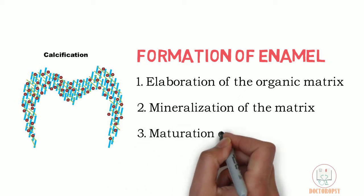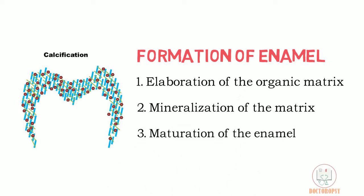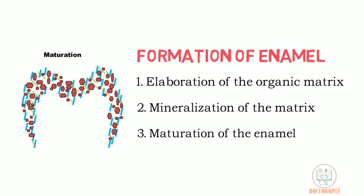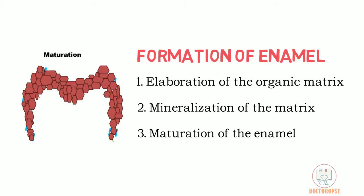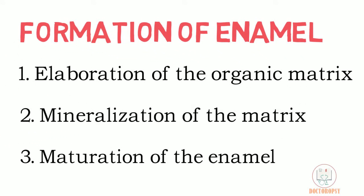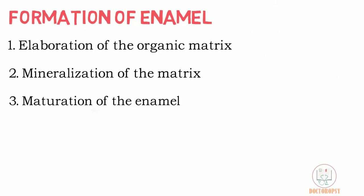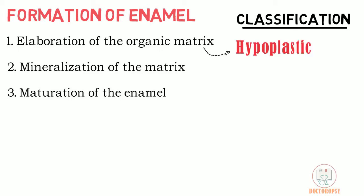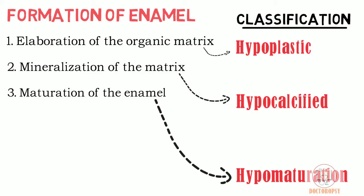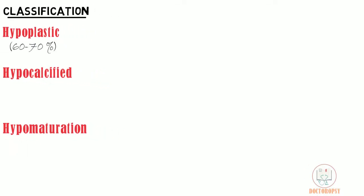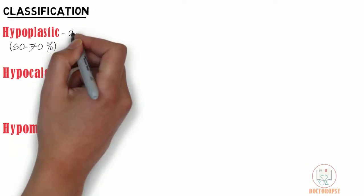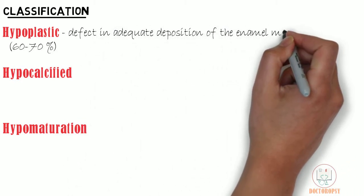Third, maturation of the enamel — for mineralization to reach its goal of 97 percent, space is made by removing the enamel proteins so that calcifications increase in size gradually. The organic matrix is removed almost completely and the mineral deposits form the whole structure. Depending on which of these stages is affected by genetic mutation, amelogenesis imperfecta is broadly classified as hyperplastic, hypocalcified, or hypomaturation. Around 60 to 70 percent of cases are hyperplastic type, where the basic defect is inadequate deposition of the enamel matrix.